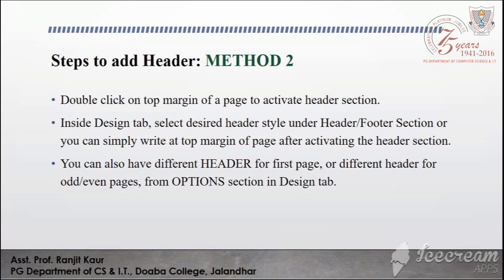Now let's see Method 2. This is a very simple method. For this, you just need to double-click on the top margin of a page to activate the header section. After that, go to the Design tab and select the desired header style under the Header & Footer section. Or you can simply write at the top margin of your page after activating the header section. You can also have a different header for the first page, or a different header for odd or even pages, from the Options section in the Design tab.